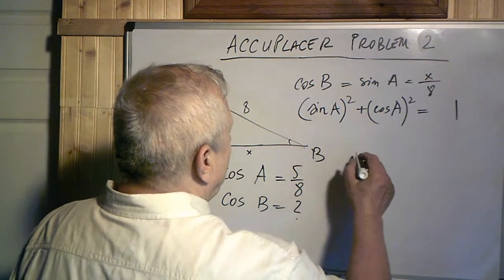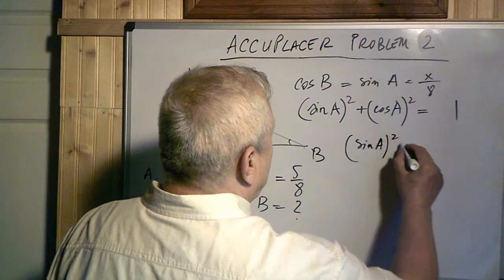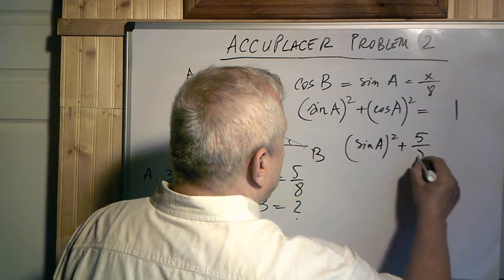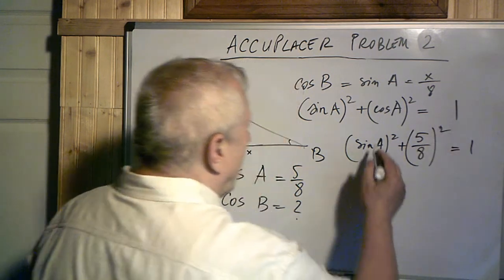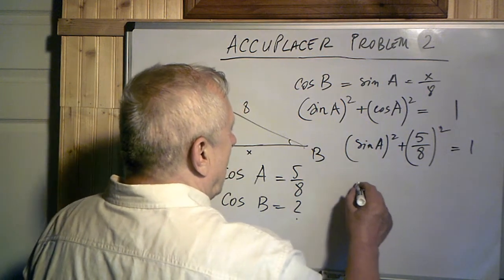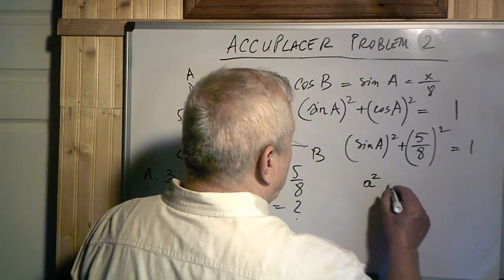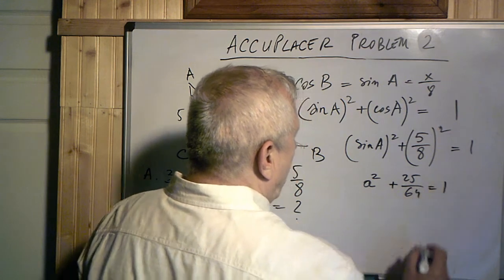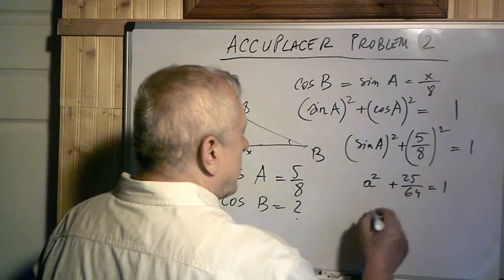So sine of A to the power of 2, plus cosine of A squared, which is 5 over 8 squared, is always 1. Let's find out sine of A. Let's use, instead of sine of A, let's use a lowercase a. So a squared plus 25 over 64 equals 1. Now let's multiply with 64 on both sides.